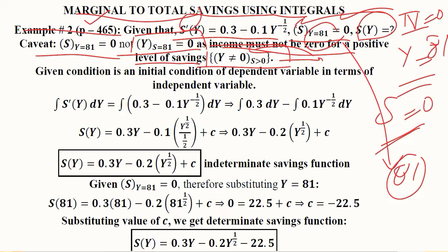Coming back to the solution, it's quite intuitive that we have to take the marginal version of the savings function and integrate it. This is the marginal savings function that we have integrated: ∫S'(Y)dY = ∫(0.3 - 0.1Y^(-1/2))dY.